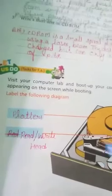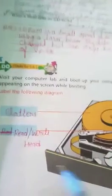The data stored on a CD-ROM cannot be changed but can only be read. CD-ROM is made of bits. Label the following diagram: platters, read/write head, common access arm, and access arm.